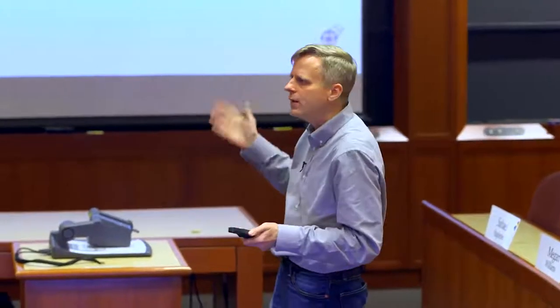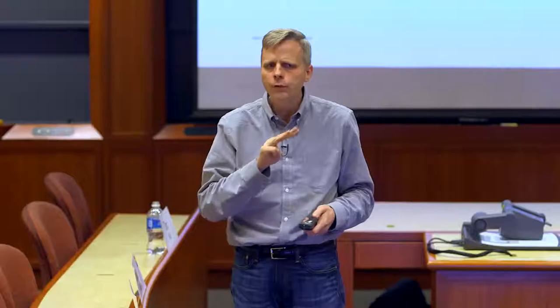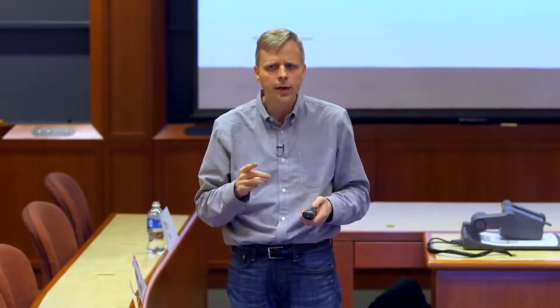Hashgraph is the consensus algorithm — it's the way that computers talk to each other and come to an agreement on the transactions. Hashgraph is fast, secure, and fair. These are the three main things you want in a ledger. It's faster and more secure than other ledgers, and it's fair in a way that other ledgers are not. There are some unusual things about it.